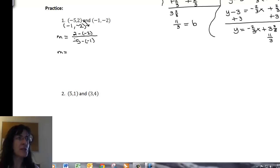And then my m is 2 minus negative 2 is 2 plus 2, so I get a 4 for the numerator. And then negative 5 minus a negative 1 is going to be negative 5 plus 1, so negative 4. And when I simplify that, I get a negative 1. So my slope is negative 1.